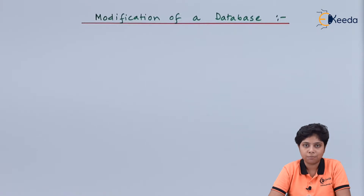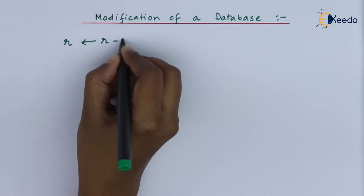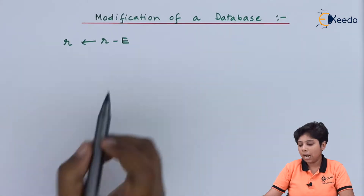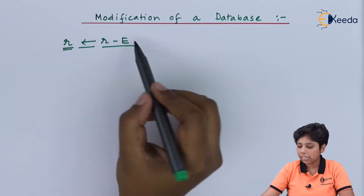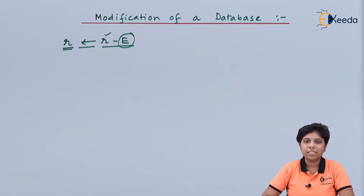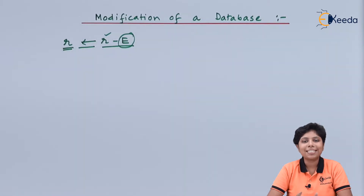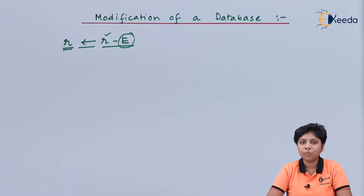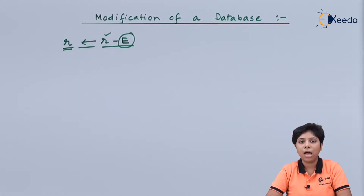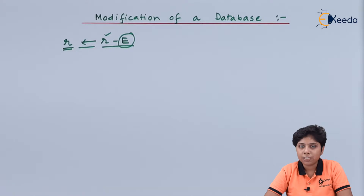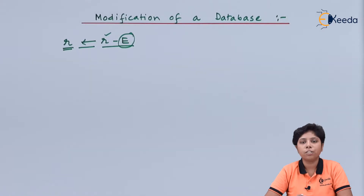First we will see a generalized form of how to delete and note it using notation on a relational database. Here we can see that r is a relation which is assigned with the set difference operation. We are deleting from r — subtracting means we are actually deleting the value from the relation. This is the general formula to delete anything from the relation and assign it back to the same relation to have the desired effect. We will now discuss every case possible to delete a tuple, a record, or an attribute from a relation.